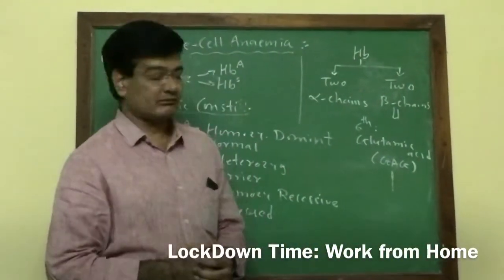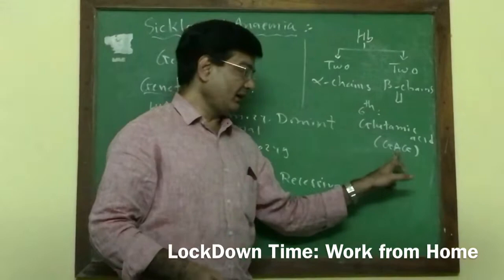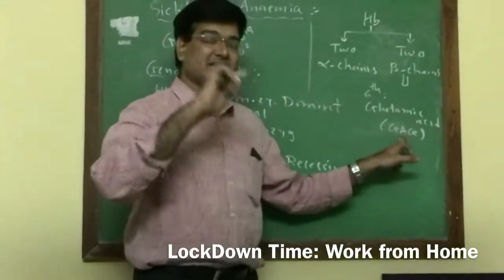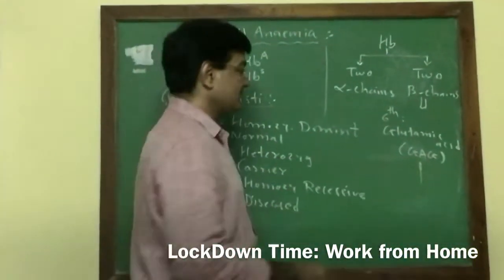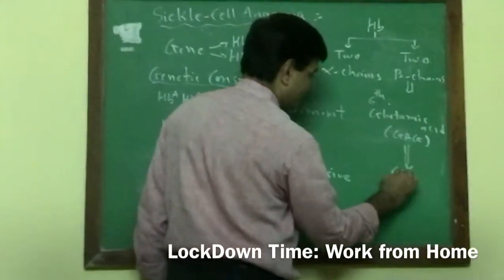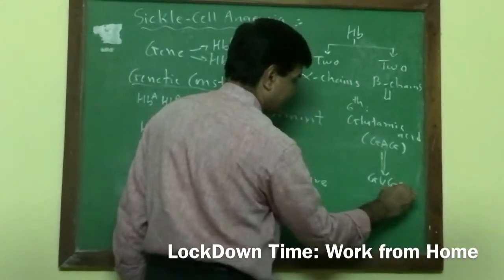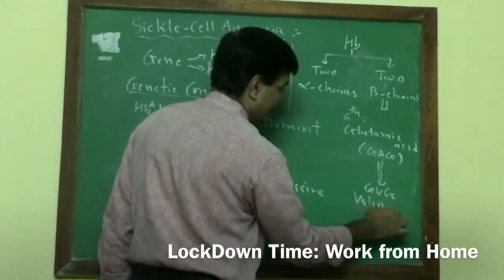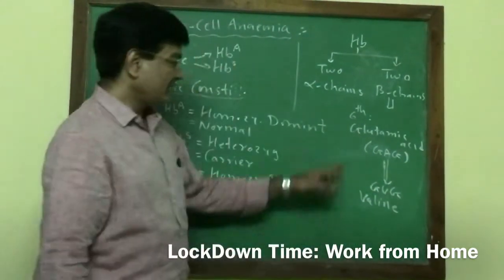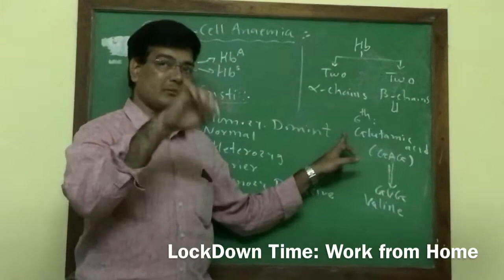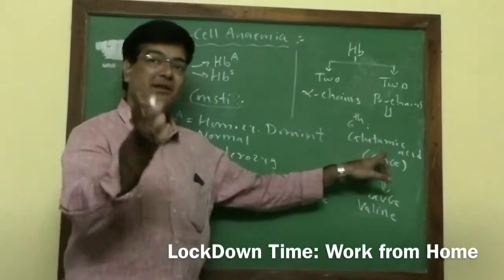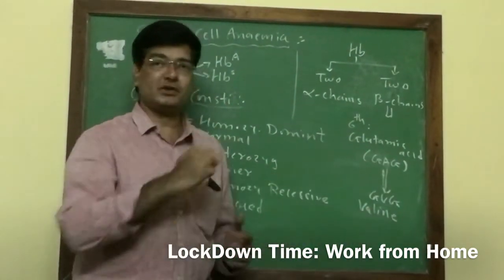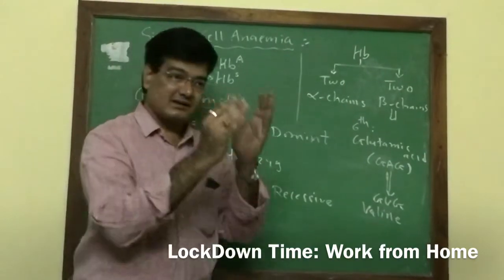In this condition, the genetic code becomes GUG, and this codes for the valine kind of amino acid. So due to genetic abnormality, glutamic acid is replaced by valine at the sixth position, and that's why there is one amino acid wrong in the beta chain.